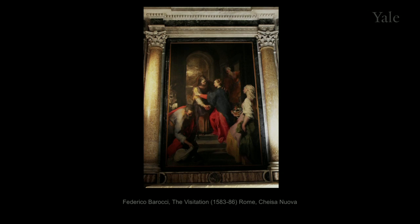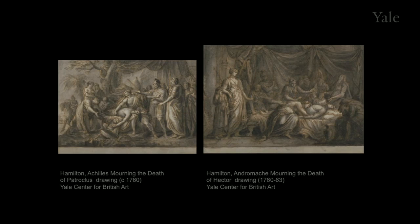After this little grand tour of our own, I'm going to return to Hamilton as a painter. Hamilton's most ambitious project — what he called his great plan of life — was a series of six pictures with subjects from the Iliad of Homer. They began in 1760 with drawings, now in the British Arts Centre, in preparation for two large paintings. The subjects are similar: lamentations of the deaths of warriors on both sides of the war.